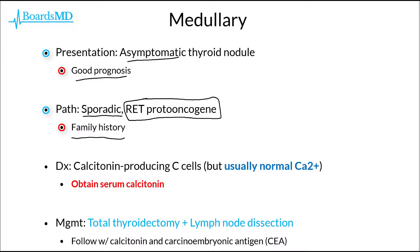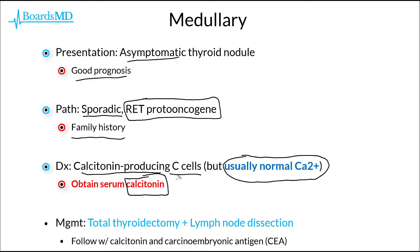One of the keys to the diagnosis of medullary carcinoma of the thyroid, especially on examinations, is that these patients are going to have calcitonin-producing C cells. Generally speaking, these patients are going to have normal levels of calcium when you measure their serum calcium level. However, if you obtain a serum calcitonin, this will classically be elevated in patients with medullary carcinoma of the thyroid — extremely high yield for examination purposes. This calcitonin will come in handy after resection via a total thyroidectomy and lymph node dissection, as we can then follow the calcitonin level and watch as it hopefully drops and stays low once the patient is in remission.